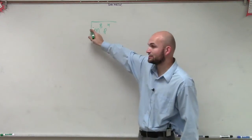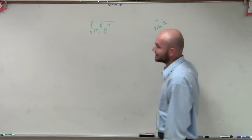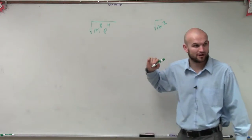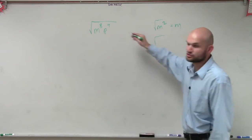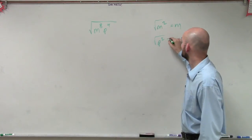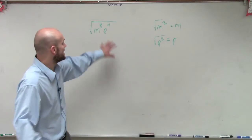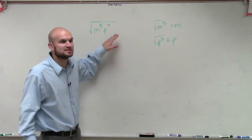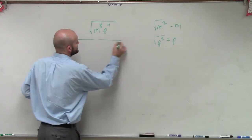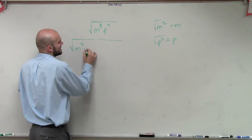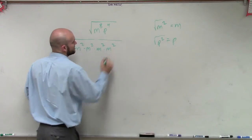So when I look at this, I'm taking the square root, so I know that m squared — I can take the square root of that, because the square root of m squared is m. And I know I can take the square root of p squared, which is just going to equal p. So one way is to rewrite this with as many squared numbers as possible. I can rewrite m to the eighth as m squared times m squared times m squared times m squared.